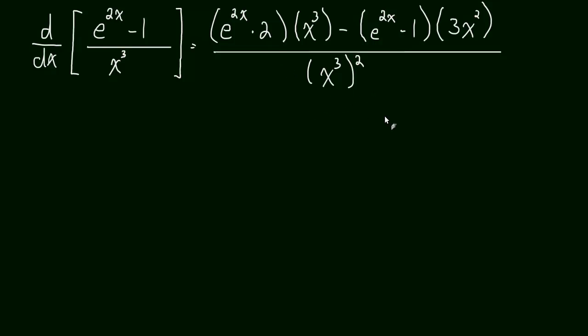The quotient rule — it's not too hard. You basically have to memorize that phrase: the derivative of the numerator times the denominator minus the numerator times the derivative of the denominator, all over the denominator squared. It's really a phrase you can say to yourself that will help you remember the quotient rule. In the next video, I'll show you why you don't have to memorize the quotient rule — why you can use the product rule and the chain rule to take these derivatives. See you in the next video.